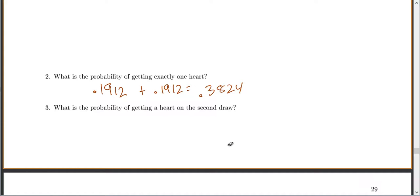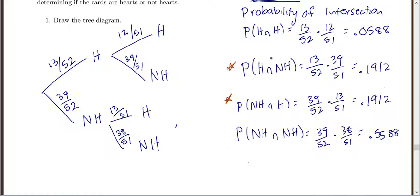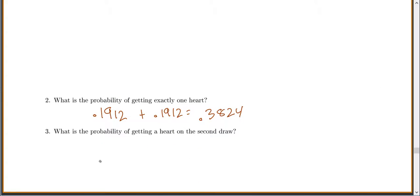Number three, what's the probability of getting a heart on the second draw? You go through, which ones have hearts on the second draw? This one has a heart on the second draw, and this one has a heart on the second draw. So you add up those probabilities: 0.1912 plus 0.0588 is 0.25.